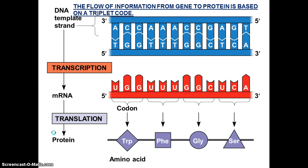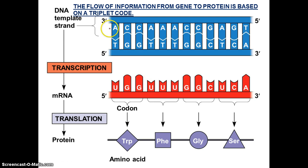The flow of information from gene to protein is based on a triplet code. Our code is made up of three nucleotides. Here's your DNA template — it's double stranded. The strand we use to make mRNA is the 3' to 5' strand, and that's our template strand.